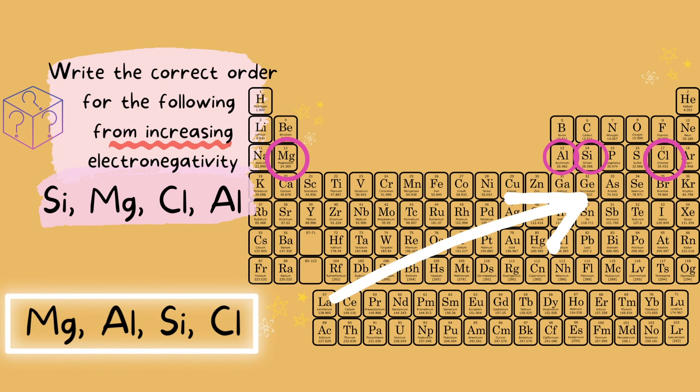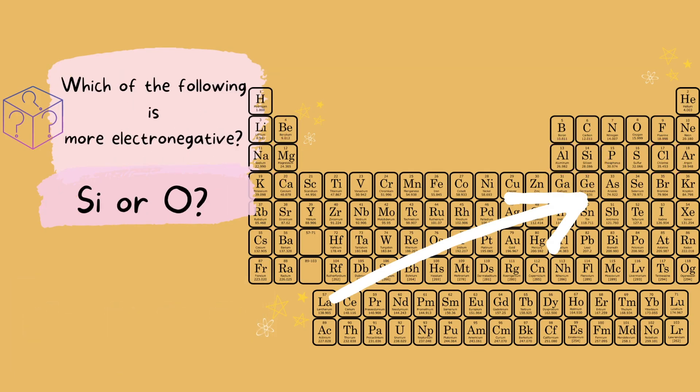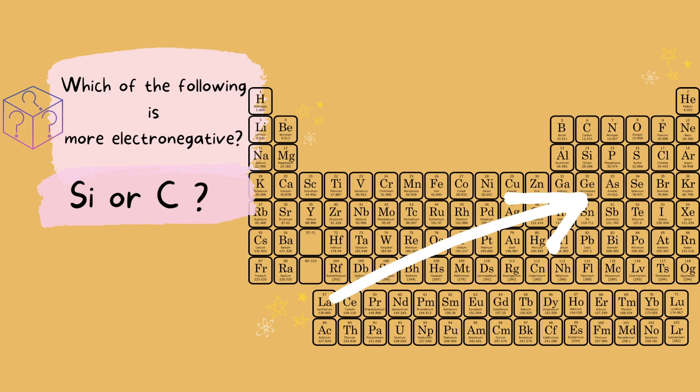Magnesium is the least electronegative and chlorine is the most electronegative. How about silicon or oxygen? Oxygen is closer to fluorine, so it is more electronegative. How about silicon or carbon? Carbon is going to be more electronegative because it is above silicon.